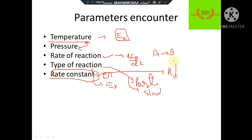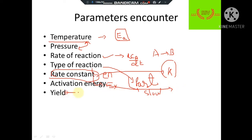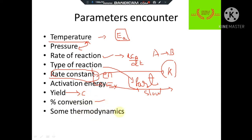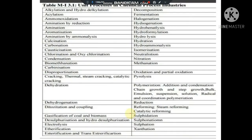We will also encounter the term rate constant, which is termed as k. Then activation energy — that is the minimum energy required to begin the reaction. Conversion and yield — that is, how much of what we input is converted — can be calculated using yield and percentage conversion. And some thermodynamic principles are the main principles required to analyze any unit process.